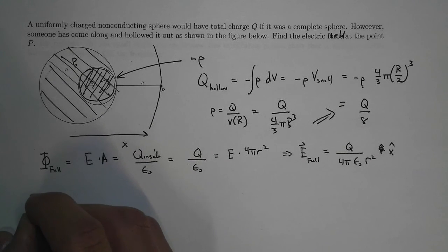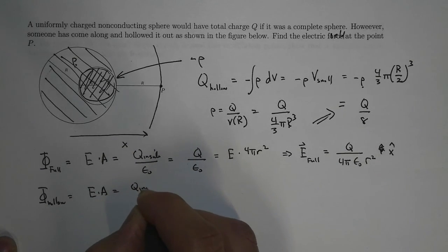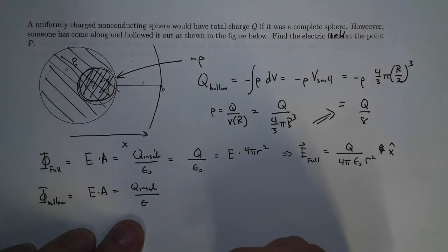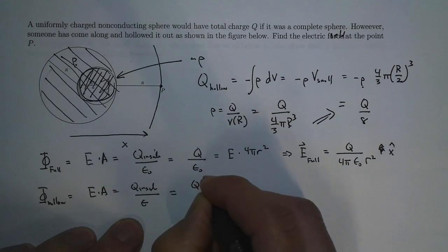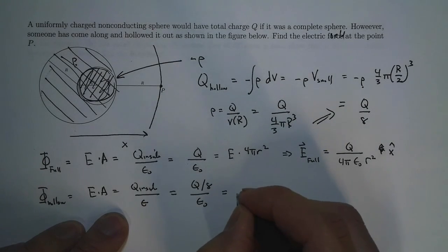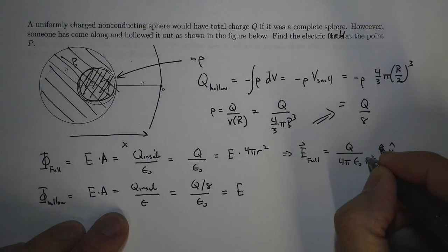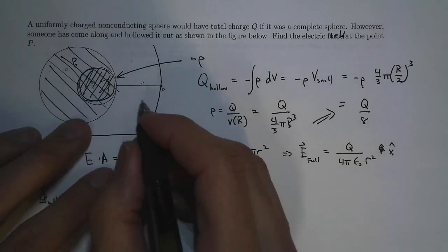Let's do the flux of the hollow sphere. E dot A is Q inside over epsilon naught, and inside now refers to this sphere only. We're going to add these two electric fields together. This equals Q over 8 over epsilon naught. You have to be extraordinarily careful because this R is different. This R is a different distance than the previous one.